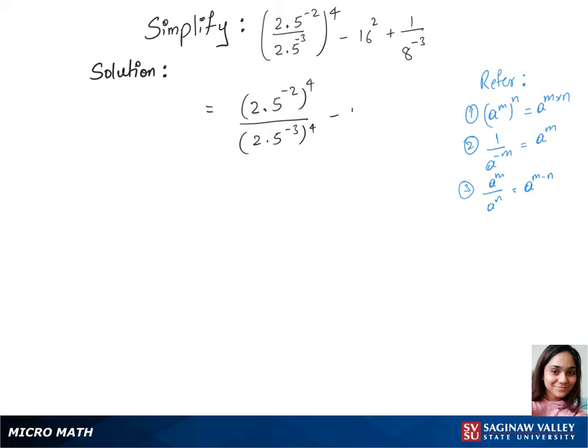Let's keep this minus 16 square the same and we'll bring this 1 over 8 power minus 3 up and write this as plus 8 power 3. We just used rule 2 there. Now we'll multiply the powers to the base 2.5 and write this as 2.5 power minus 8 over 2.5 power minus 12.